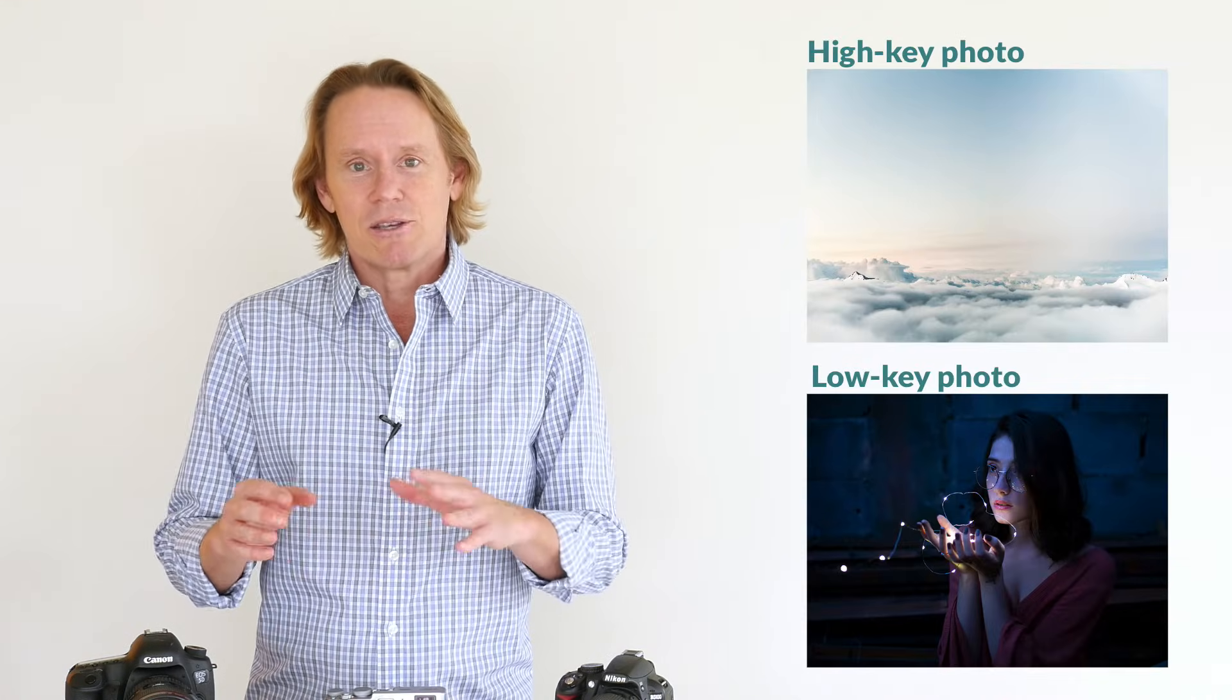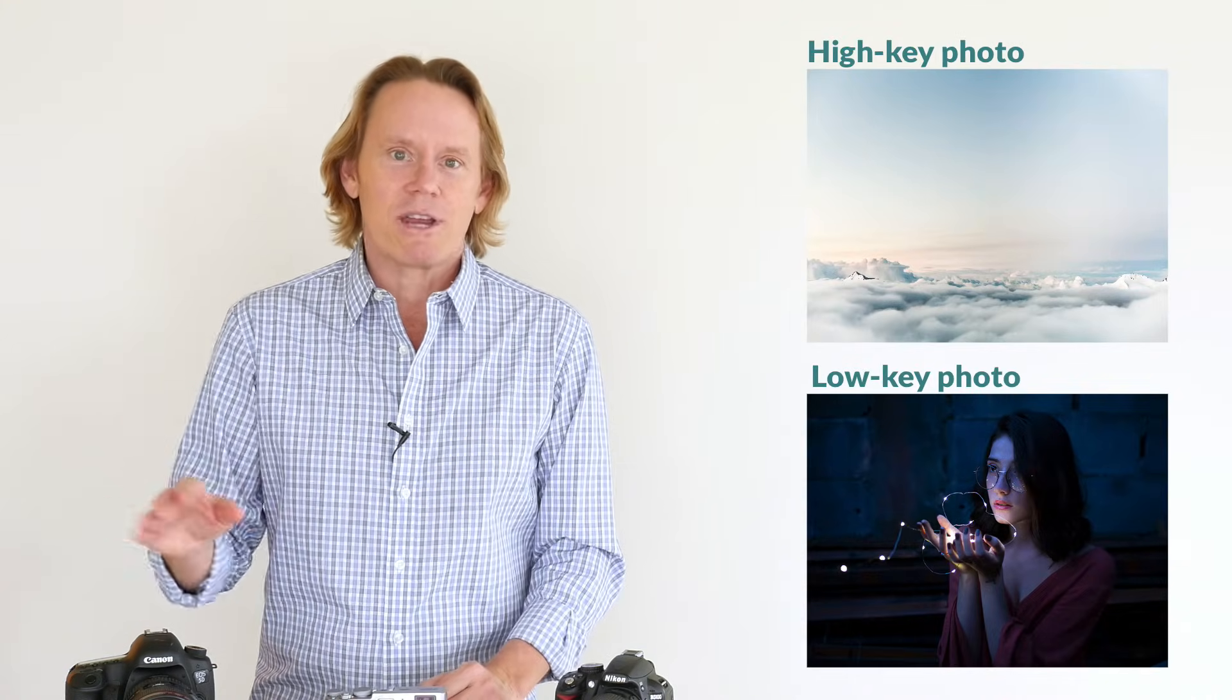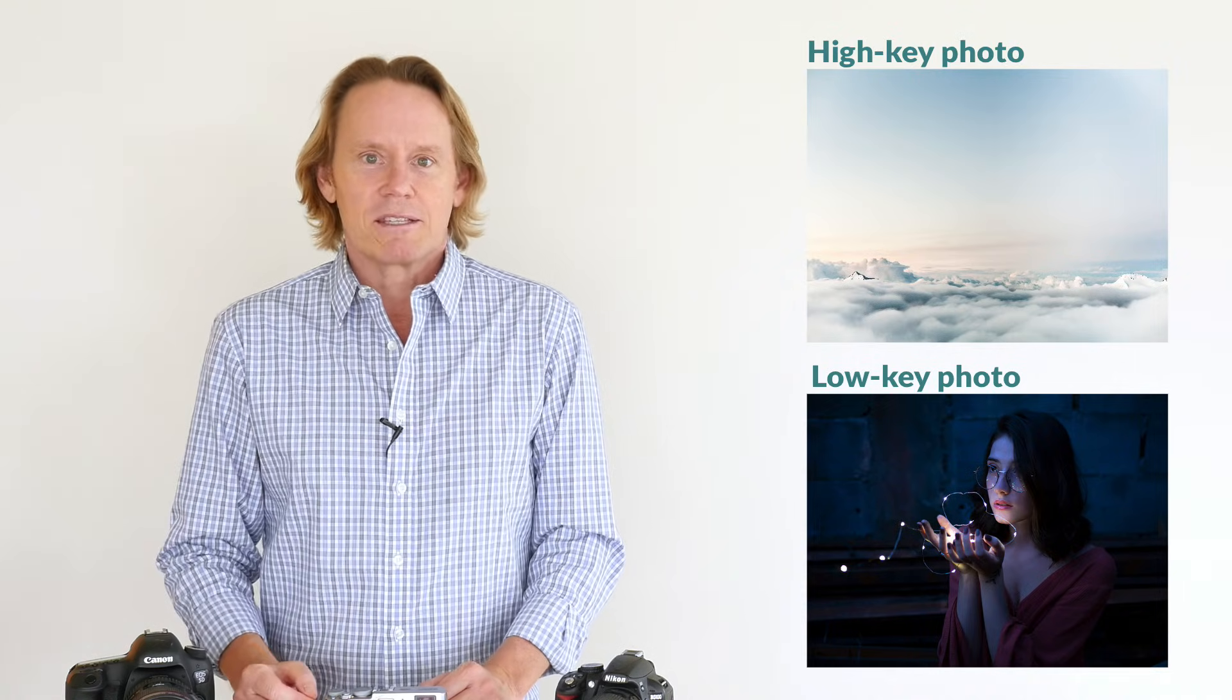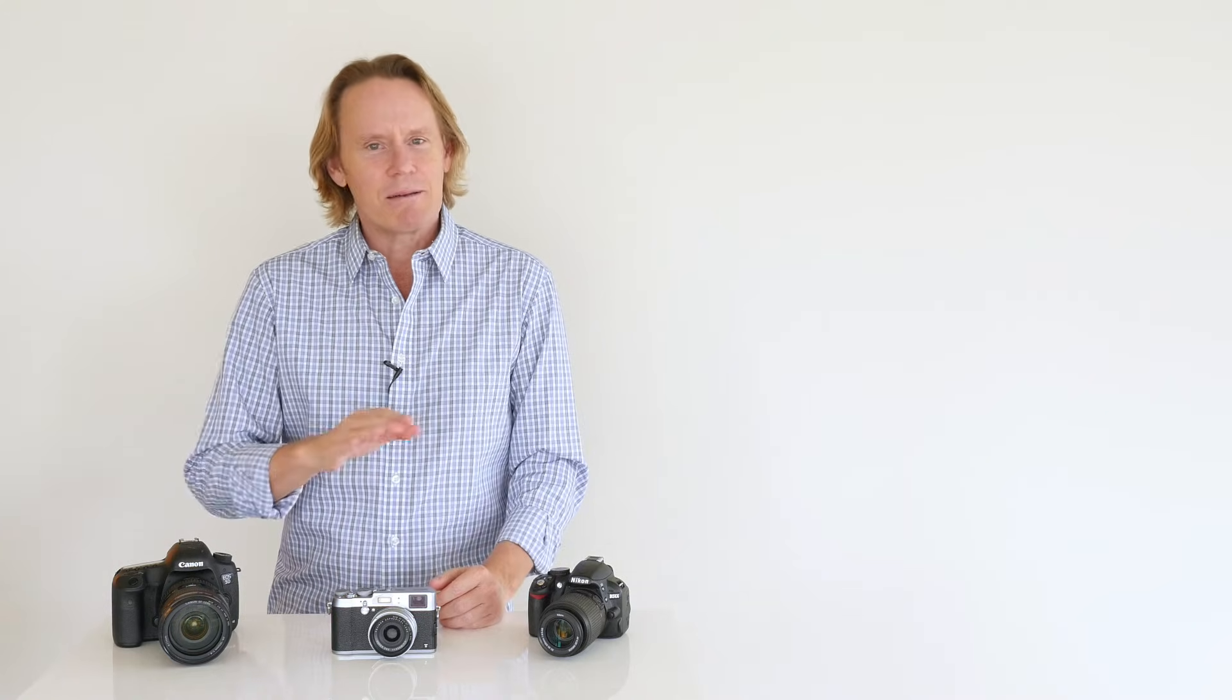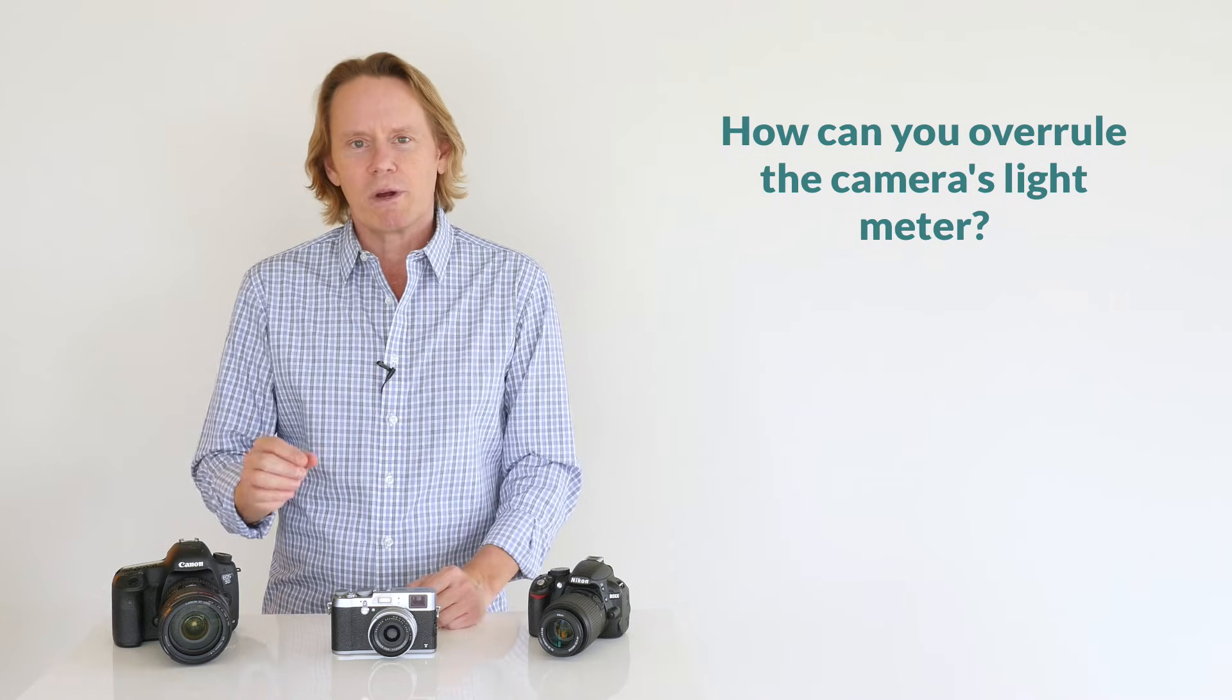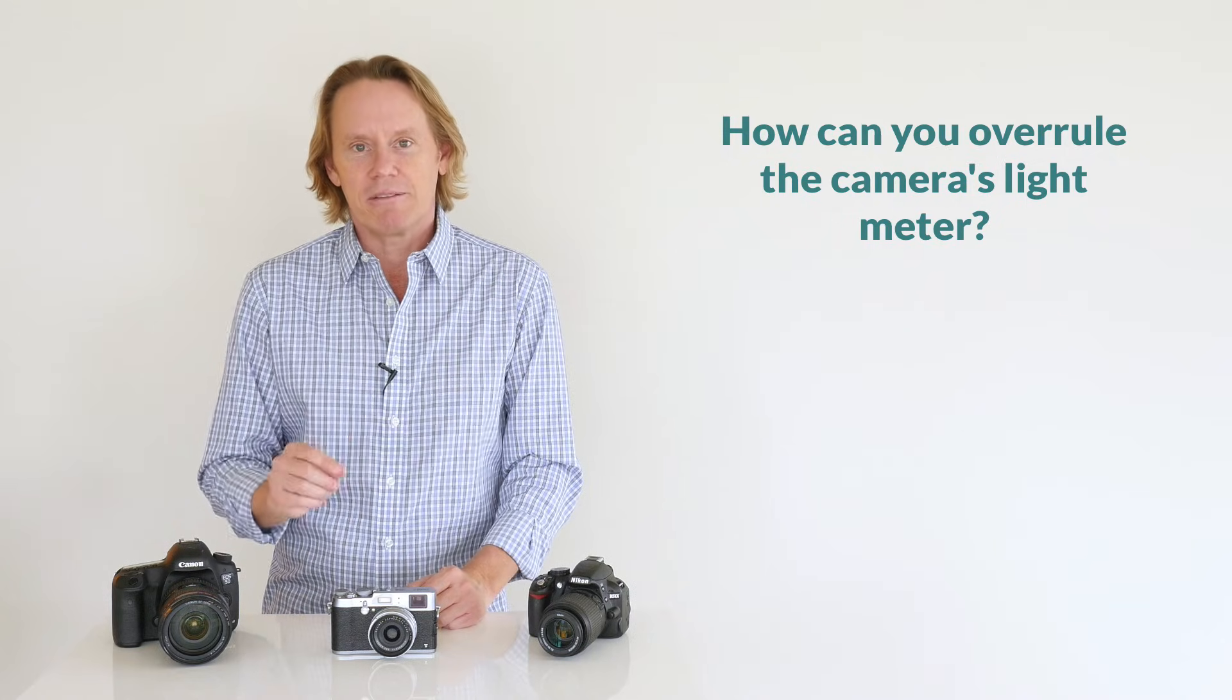Now obviously, this does not only apply to wedding photos. It doesn't matter what you're shooting, whether it's landscapes or street photography or portraiture, there are many scenes that do not look best when averaged out to middle gray. There are some scenes where you want a lot of brightness, some scenes where you want a lot of darkness. But the camera is very simple-minded and it loves middle gray. So how do you overrule the camera when you know the exposure needs to be different?